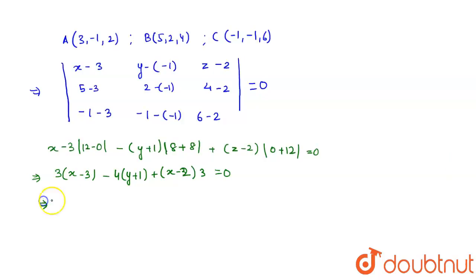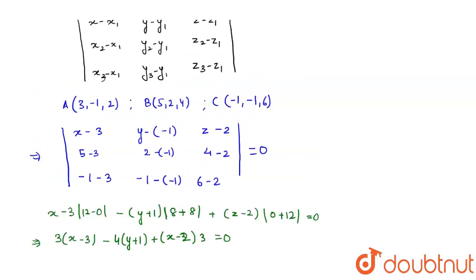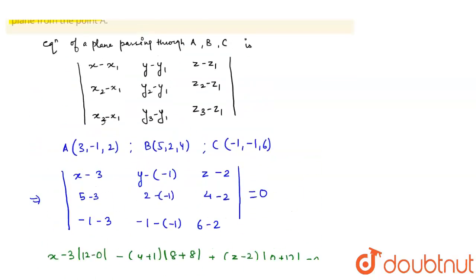So, this implies, what do I get after opening the brackets? 3X-9 minus 4Y-4 plus 3X-6 is equal to 0. After simplifying it further, I get 3X-4Y+3Z is equal to 19. So, therefore, this is the equation of the plane.